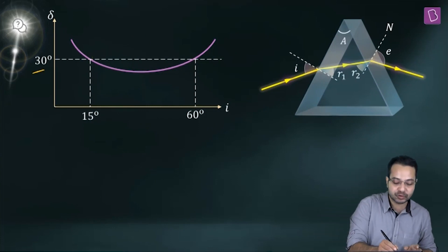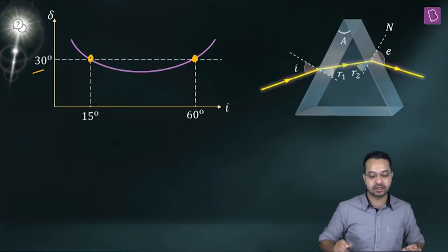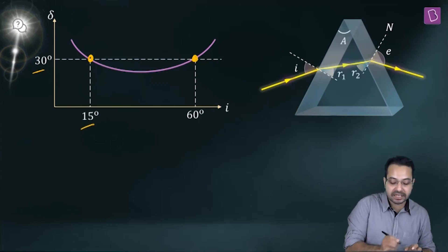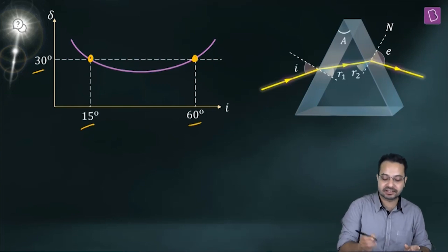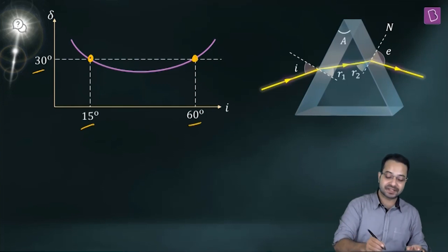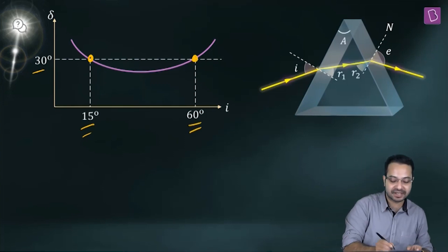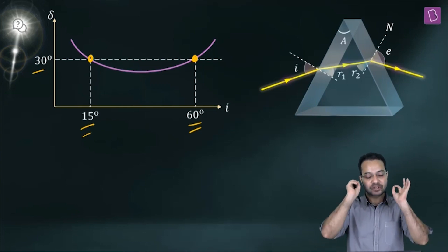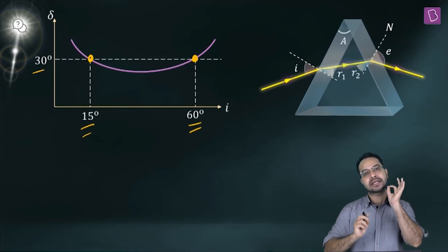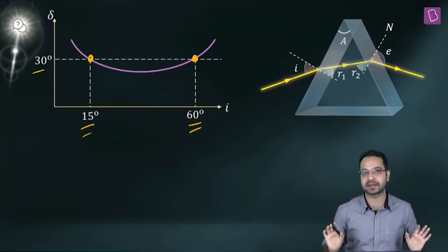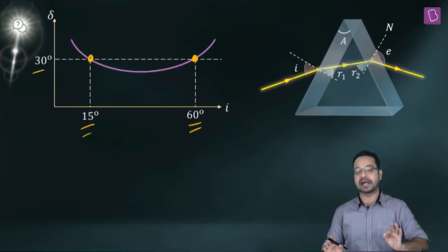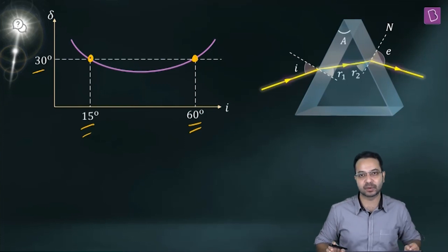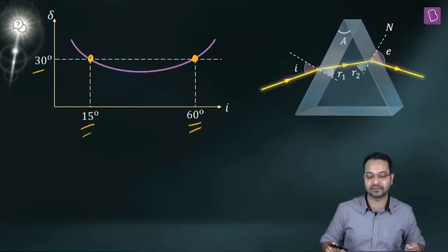So the 15° and 60° pair is the incidence and emergence pair — it is interchangeable. That is a very important and interesting consequence of the reversibility of the path of light. Taking i = 15°, e becomes 60°.